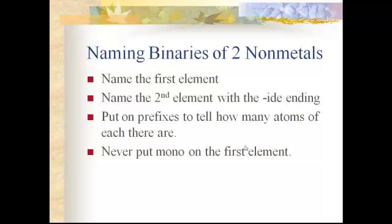So when we go about naming these binaries of two non-metals, and remember this works only for binaries that have just two non-metals, the naming is pretty straightforward. It's just the name of the first element, and then you name the second element with the -ide ending on it. The only difference is now you go back and put prefixes on to tell how many atoms there are of each of them, with just this one exception: you never put mono on the first element. It's always understood that if there's no prefix on the first element, there's just one atom of it.